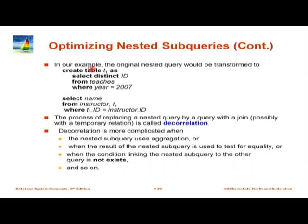This process of taking a nested query and replacing it with a query that does not have nesting is called decorrelation. Decorrelation is more difficult if the nested subquery uses aggregation, or the result is used to test for equality, or it is NOT EXISTS or NOT IN. All these cases are harder. The initial work was based on rewriting the SQL query from SQL to SQL.